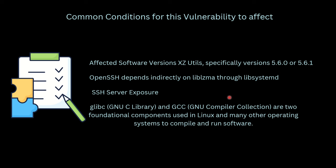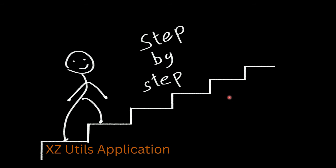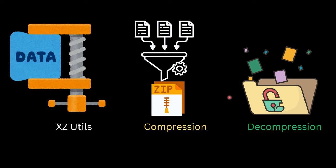Now let's understand what the XZ Utils application is and why it's used on Linux. XZ Utils is used for compression and decompression — zipping and unzipping data. In Windows you might have used WinZip or 7-Zip; similarly on Linux you have gzip, bzip2, and XZ Utils for compression and decompression. XZ Utils is ubiquitous on Linux because it's a very old application, its compression ratio is much better than other tools, and it was very well maintained.